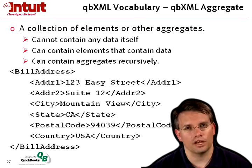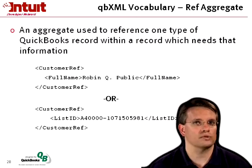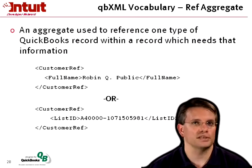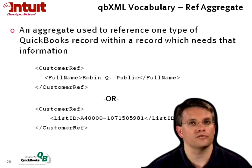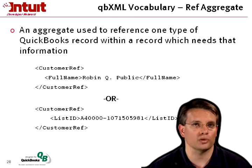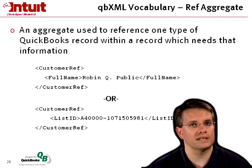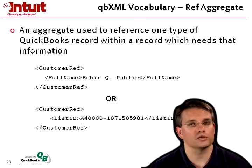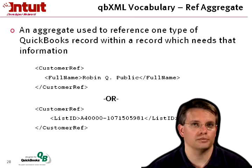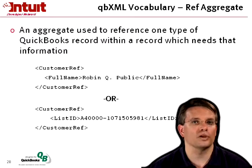Then we have a special kind of aggregate called the reference aggregate. This is used to reference one type of QuickBooks record within another record that needs that information. You'll see this very frequently in transaction add requests when you need to reference a customer, vendor, or employee. Here's a customer ref aggregate — it has both a full name or a list ID that you can provide.